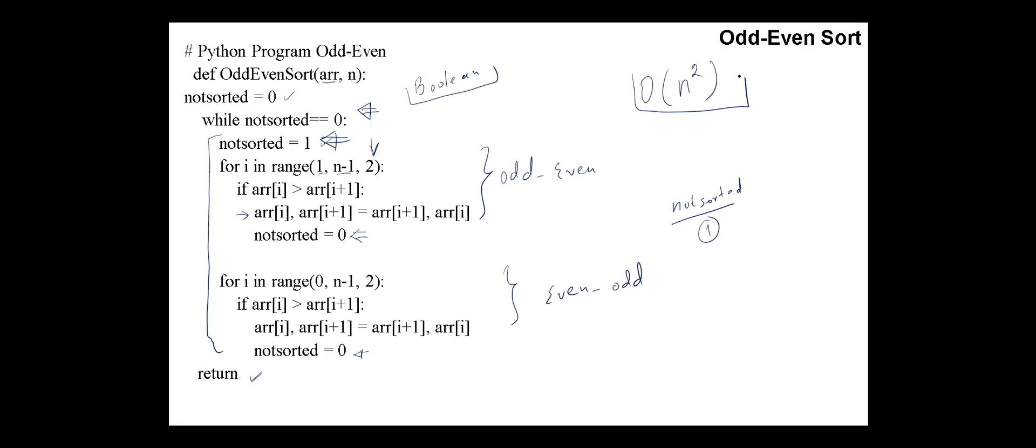The performance of optimized or improved odd-even sort is better. But in the worst case, again, the complexity is O(n²).